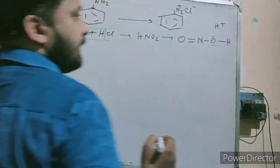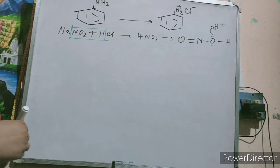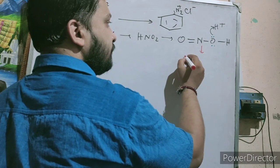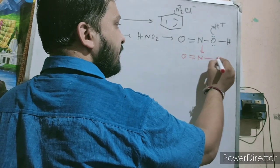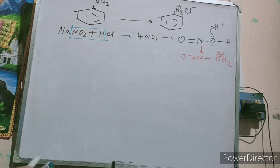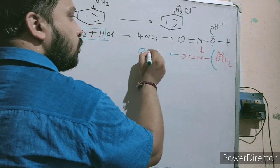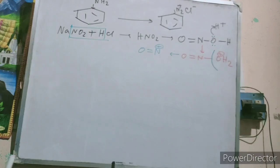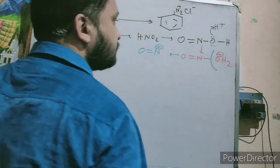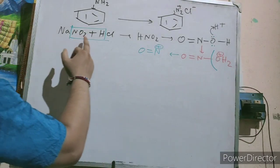If you give H+, the lone pair donates its electrons to H+. So the bond becomes O double bond N — OH2. This positive sign represents that H2O is a good leaving group, so you can easily prepare the nitrosonium ion O≡N+.